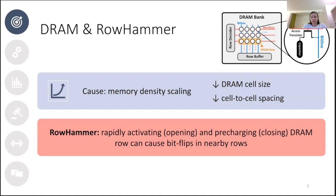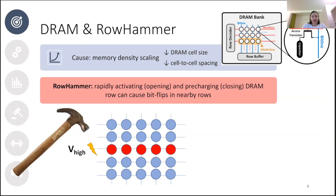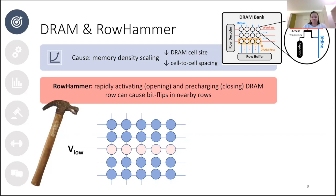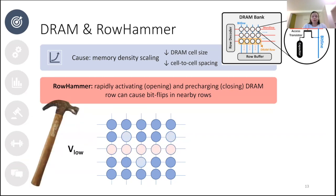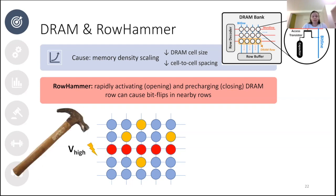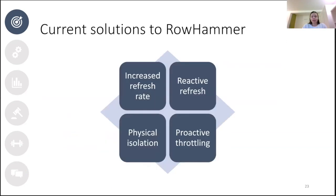This phenomenon is called rowhammer. In a DRAM bank, the row we open and close repeatedly is called the aggressor row, and the rows affected by the attack are called victim rows. If we open and close a row often enough, the colors of the bits gradually change, representing the loss of charge. Once the bits are colored red-yellow, a bit flip has occurred.